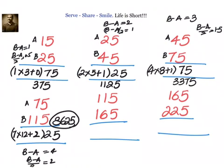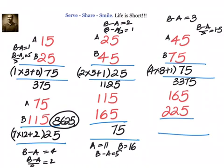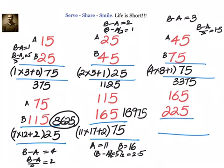We have 115 into 165. Here a equals 11 and b equals 16. Remember, always a must be less than or equal to b. B minus A equals 5, which is odd, so the right-hand side is 75. B minus a by 2 equals 2.5, and the integer part is 2. Left-hand side: 11 into 17 plus 2 equals 189 plus 2 equals 191. The answer is 18975.